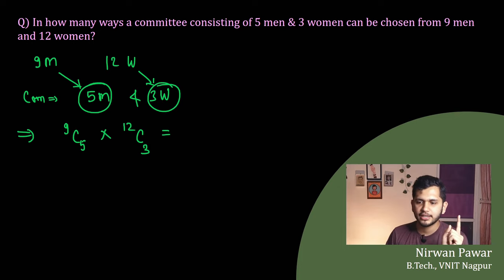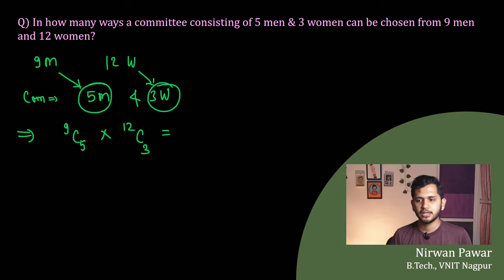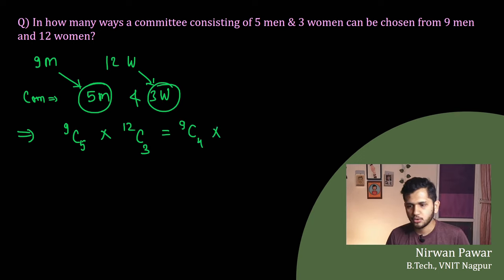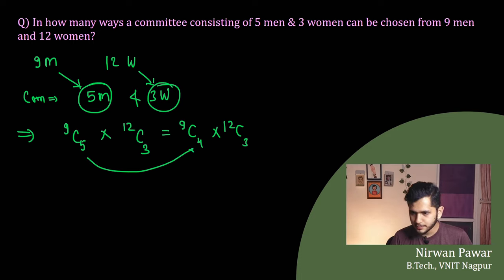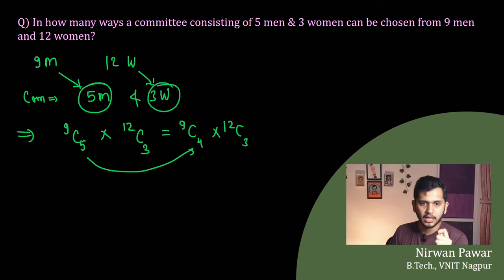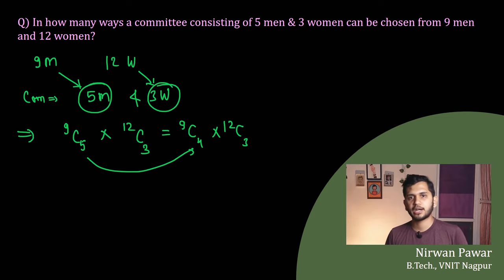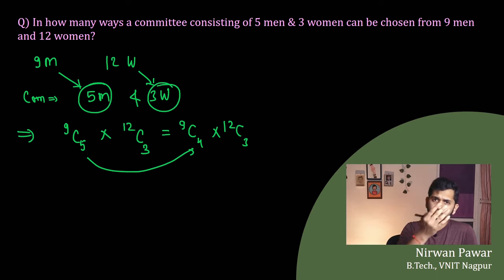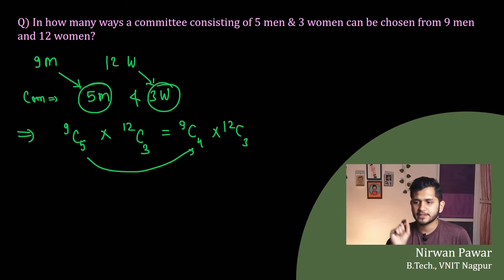To solve 9C5 directly: since 5 is greater than half of 9, I can write it as 9C4 — because nCr equals nC(n-r), so 9C5 equals 9C(9-5) which is 9C4. This advantage has been discussed in the previous video. So 9C5 into 12C3 becomes 9C4 into 12C3, making the calculation easier.